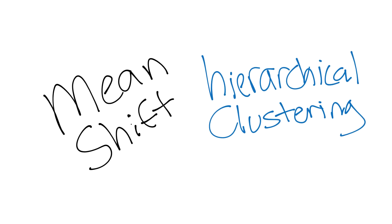Welcome to part 39 of the machine learning tutorial series. In this video and the coming videos, we're going to be talking about mean shift. Mean shift is another clustering algorithm, but this time rather than the flat clustering methodology of the k-means clustering algorithm, mean shift is what is known as a hierarchical clustering algorithm.